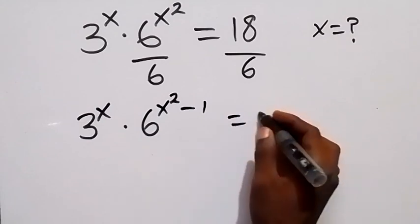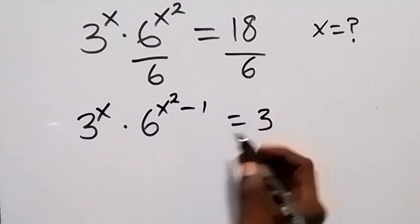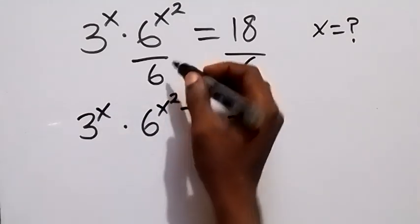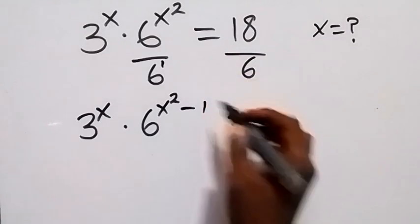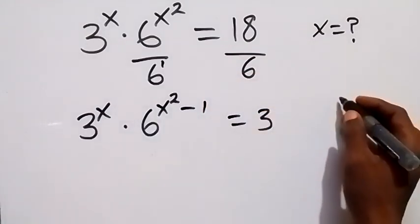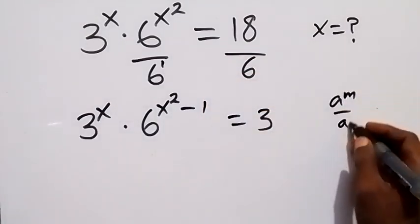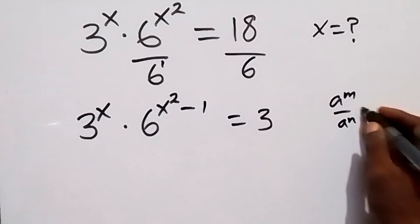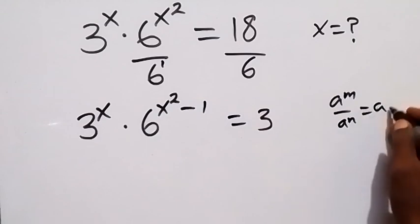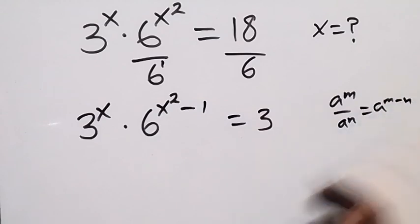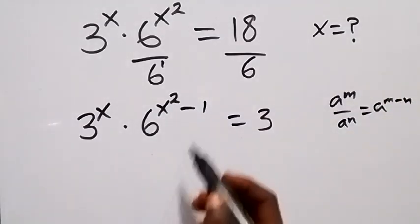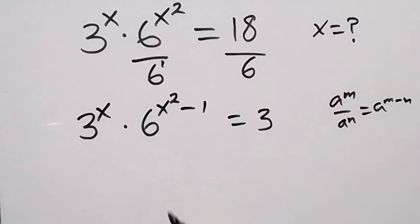This equals to 3, because here we have 6 raised to power 1. When we apply the law of indices — a raised to power m divided by a raised to power n equals a raised to power m minus n — we subtract the powers.